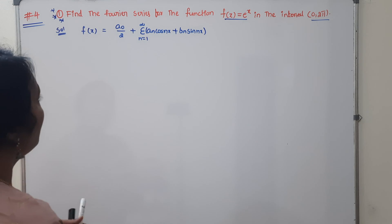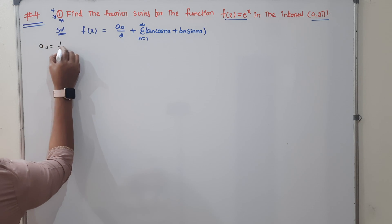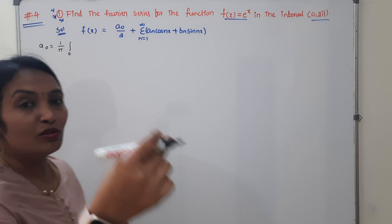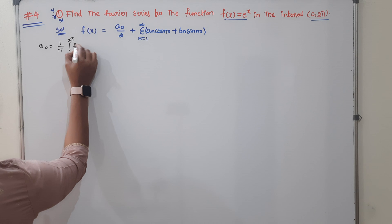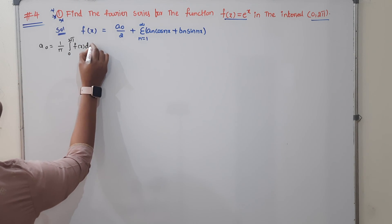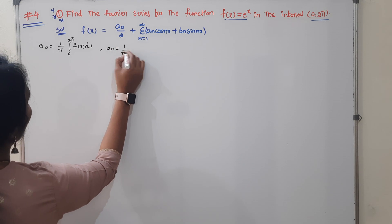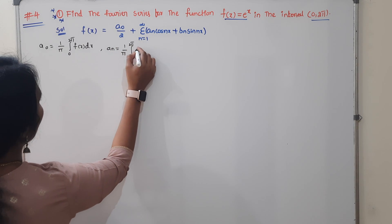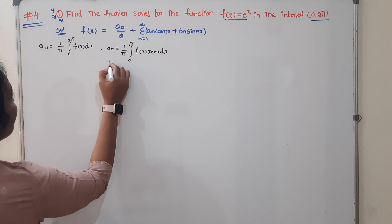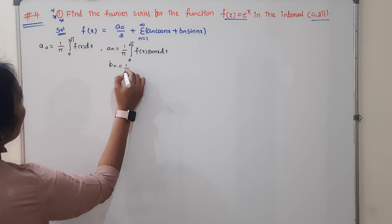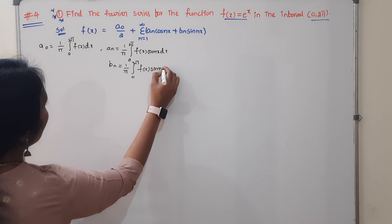What are our formulas? a0 is (1/π)·∫ from 0 to 2π of f(x) dx. an is equal to (1/π)·∫ from 0 to 2π of f(x)·cos(nx) dx. And bn is (1/π)·∫ from 0 to 2π of f(x)·sin(nx) dx.